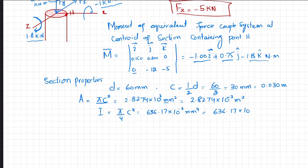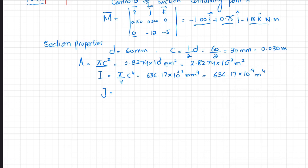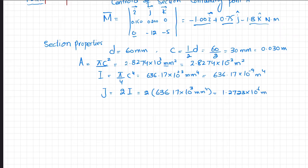Polar moment of inertia J equals 2·I equals 2 times 636.17 × 10⁻⁹, which gives J equals 1.2723 × 10⁻⁶ m⁴. We also need Q for shear stress: for a semicircle, Q equals (2/3)·c³. Substituting c equals 30 mm gives Q equals 18 × 10⁻⁶ m³.